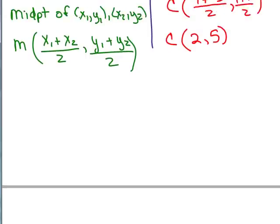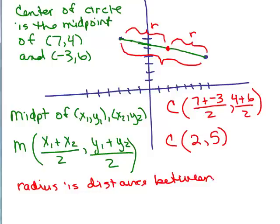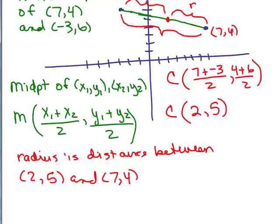So the radius is going to be the distance between (2,5) and (7,4). We need to use the distance formula.